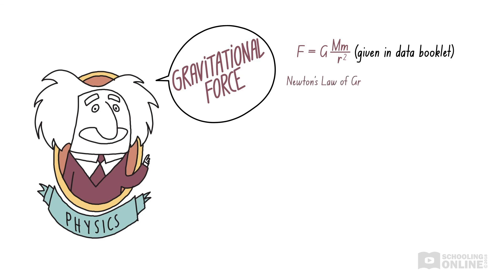However, this equation is only accurate for point objects. We can apply this to planets and other objects if we assume that their mass is concentrated at their centre, and we use the distance between their centres.